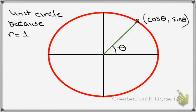Let's consider a unit circle. It's called a unit circle simply because it's a circle that has radius 1. If we draw a ray — the green ray that you see there — from the origin to any point on the circle, then it forms some angle theta with the x-axis.